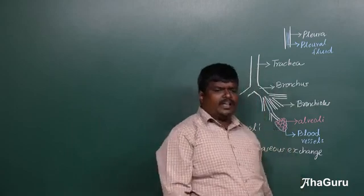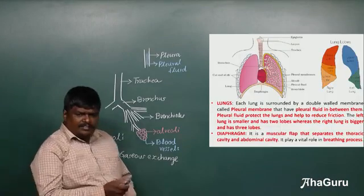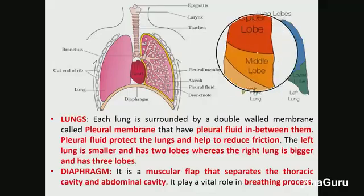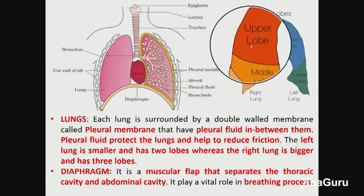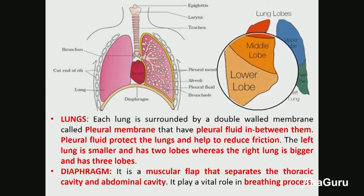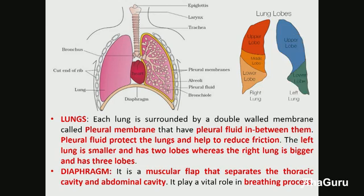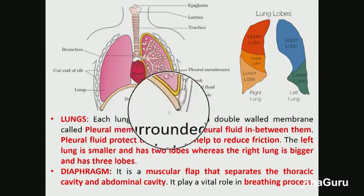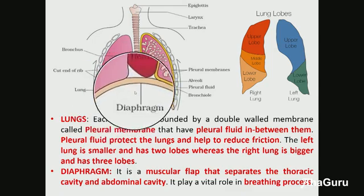The pleural fluid protects the lungs from shock and other injuries and also reduces friction in the lungs. The right lung has three lobes — upper, middle, and lower — while the left lung has two lobes. At the base of the lungs there is a flap of muscle called the diaphragm.